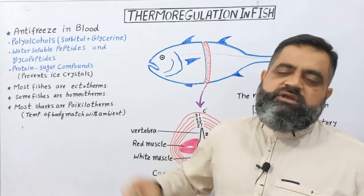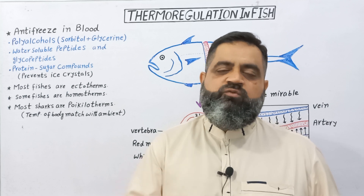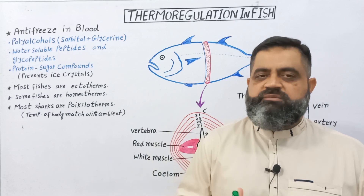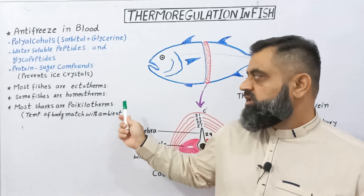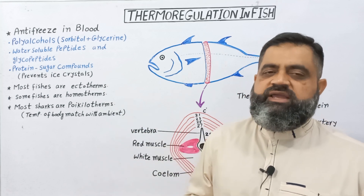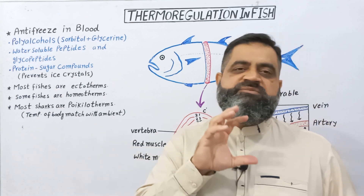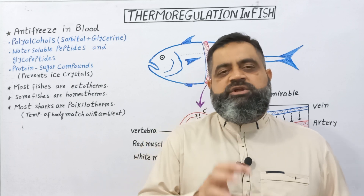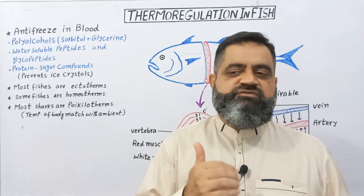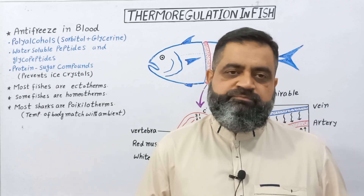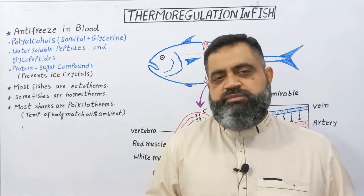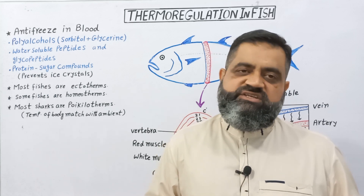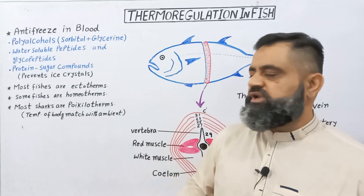Most fishes are ectothermic, meaning they get their body heat from ambient water temperature. Some fishes are homeothermic — they maintain their internal body temperature to a fixed value. Most sharks are poikilotherms; they maintain their body temperature to match the ambient temperature. For example, if a fish is living in water where the temperature is 40 Fahrenheit, the temperature of the fish is also going to be 40 Fahrenheit. If the fish is living in water at 25 degrees centigrade, the core temperature of the fish is also going to be 25 degrees centigrade. These fishes are known as poikilotherms.